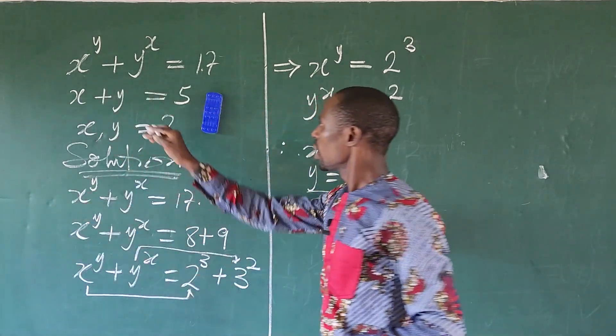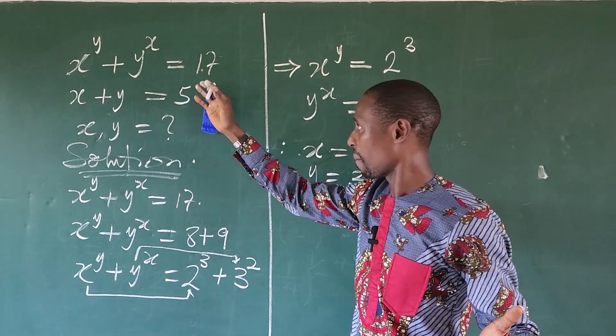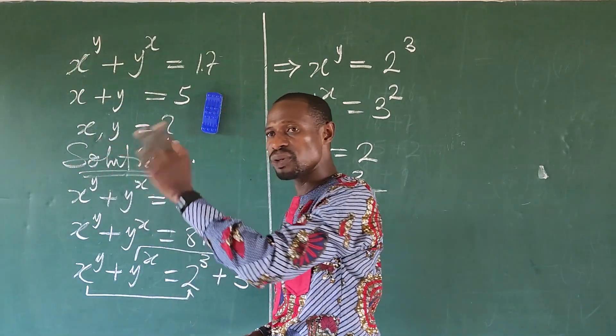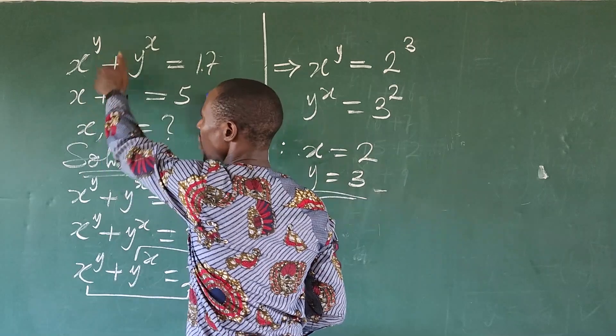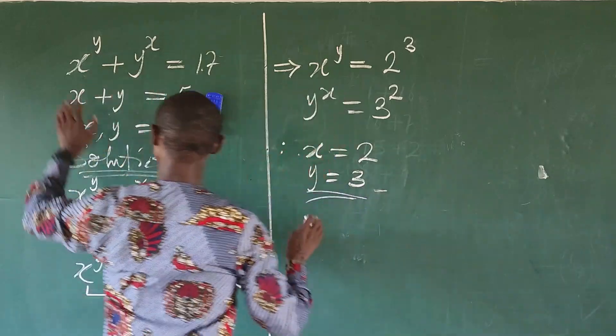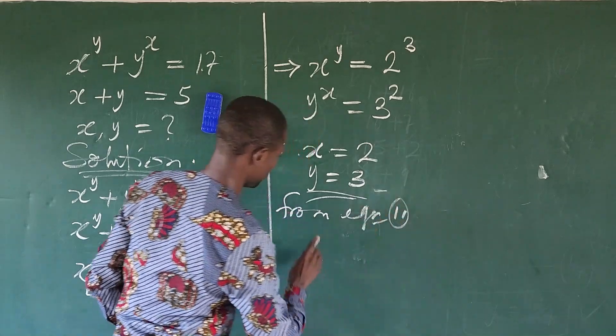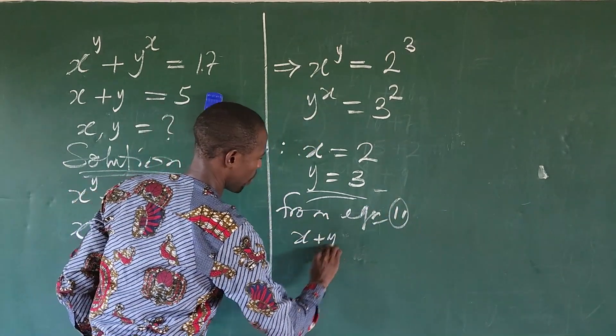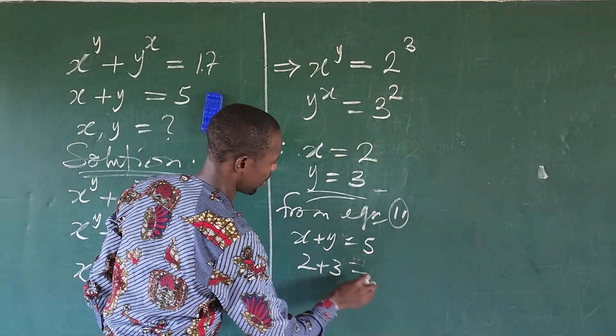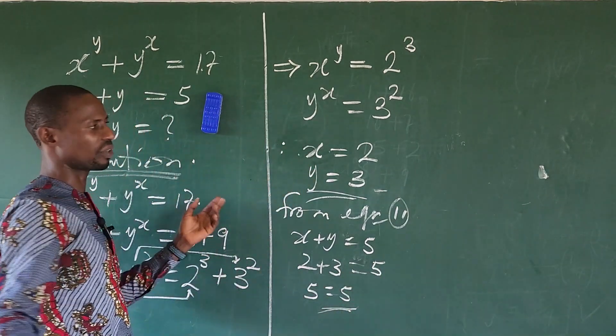Like I told you, your equation 2 is just for a confirmation. It's just for a confirmation. Because here, we cannot use elimination method. Neither can we use substitution method to handle things with what we have here now. Let's just confirm what we have here now. From equation 2, we have our x plus y equal to 5. What is our x? We have 2 plus 3, which is our y. That will give us 5. We have here 5 equal to 5. Equation 2 is just for confirmation.